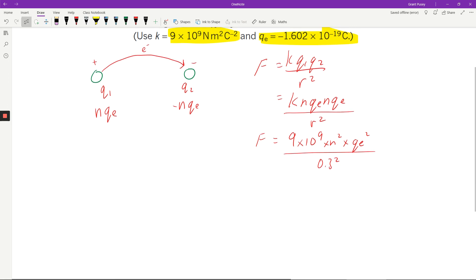Now, then I can just rearrange this equation. I already know what F is, right? So F is 1. So when I rearrange that to get N squared by itself, I end up with 0.3 squared divided by 9 times 10 to the 9 times 1.602 times 10 to the negative 19 squared.